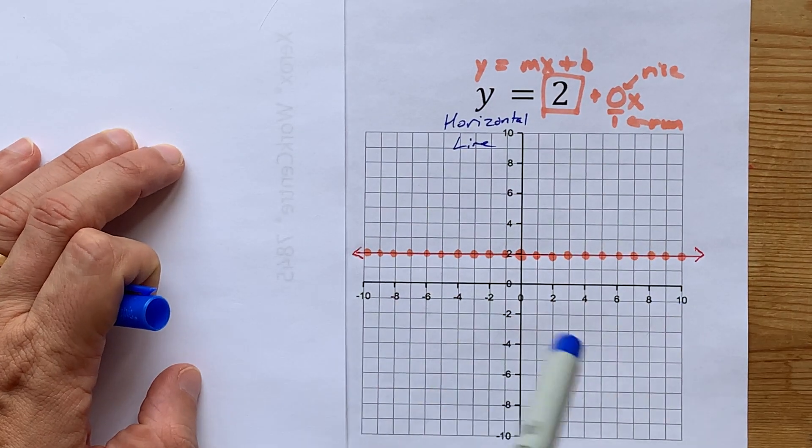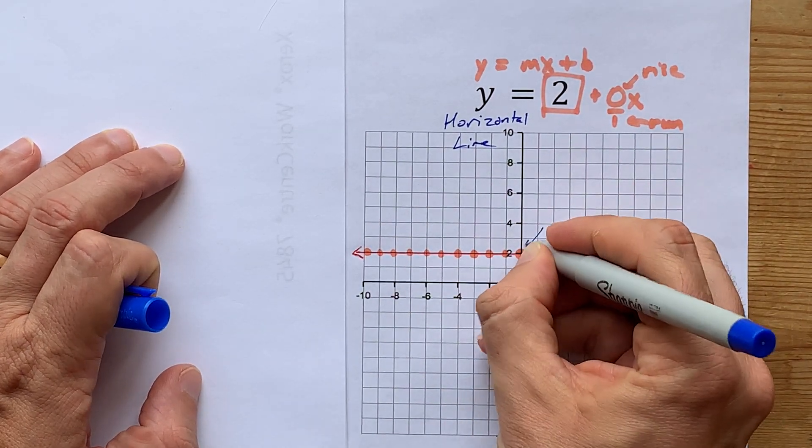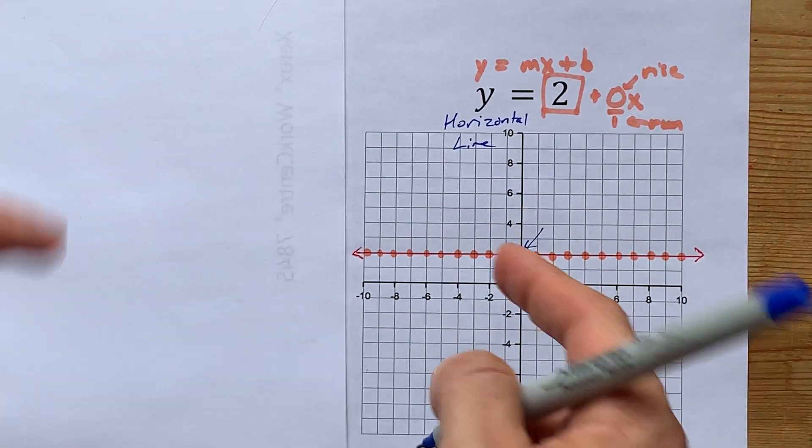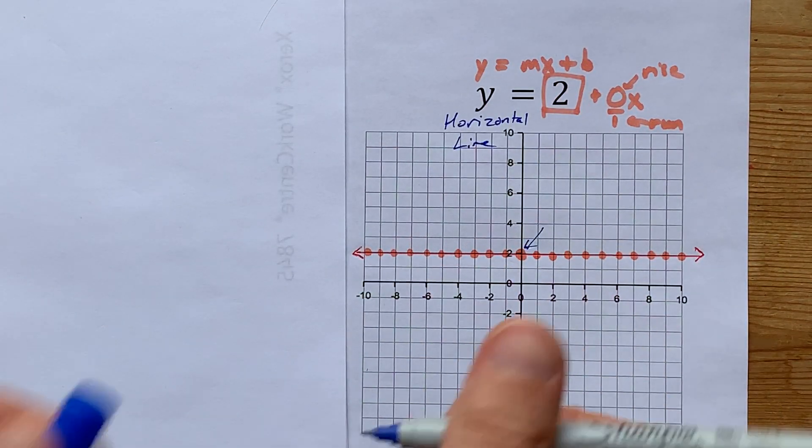So you could probably just slap a horizontal line down, make sure it goes through 2 and not some other number, because then that number would have been different, and call it a day.